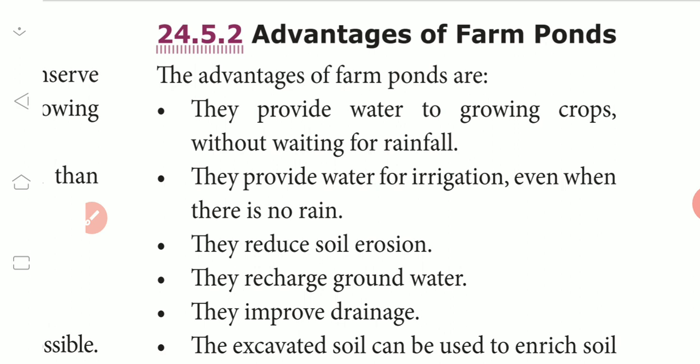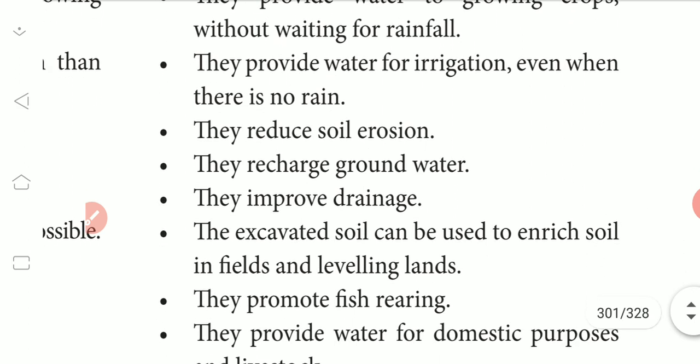Farm ponds recharge groundwater and improve drainage. Excavated soil can be used to enrich soil in fields and for leveling lands.